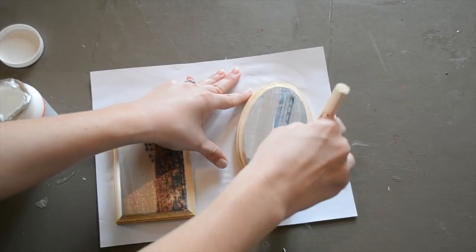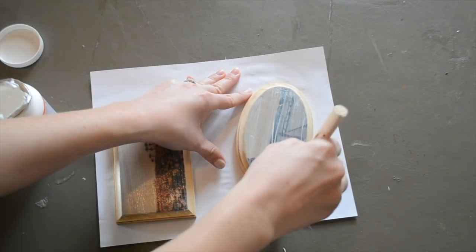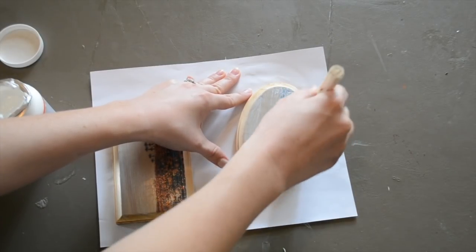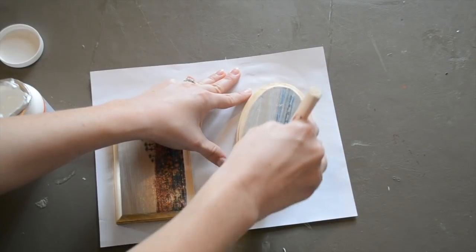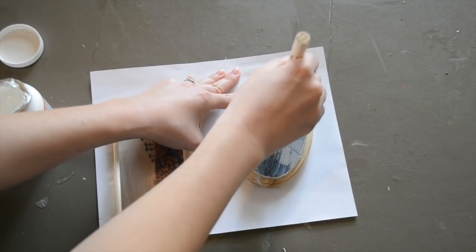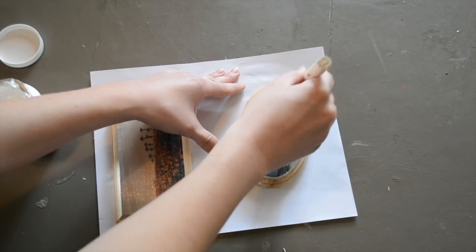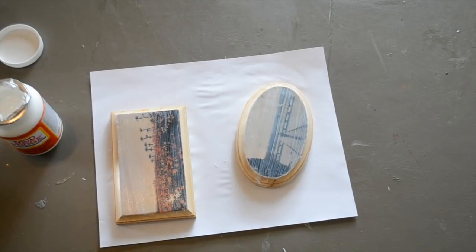If you decide after this dries that you want to add another coat, if it's not quite shiny enough for you, you can go ahead and do that. Just make sure you wait an adequate amount of time for the Mod Podge to dry completely before adding coats. I'm going to let this dry and then when it's finished, I will show you what my photo to wood transfer looks like.